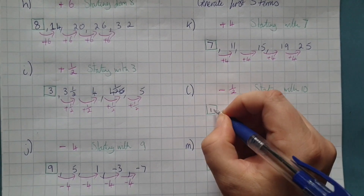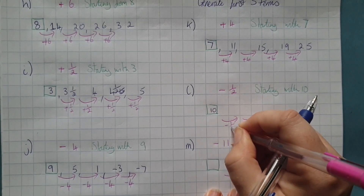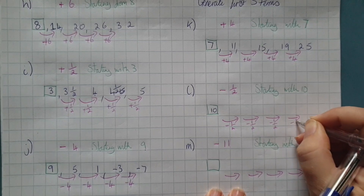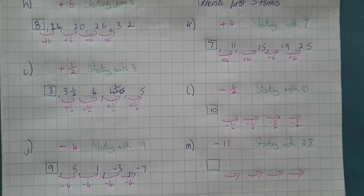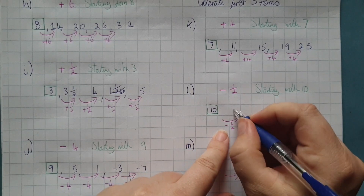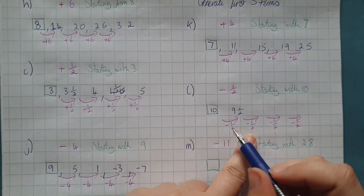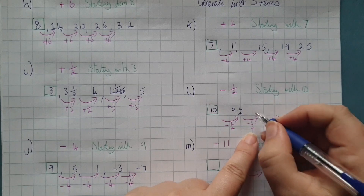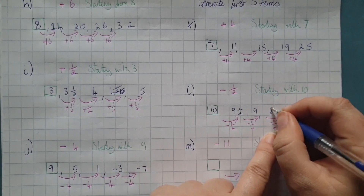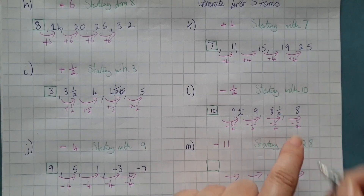Next one: starting with ten, we are minusing a half. Ten minus a half is nine and a half, nine and a half minus a half is nine, nine minus a half is eight and a half, eight and a half minus a half is eight.